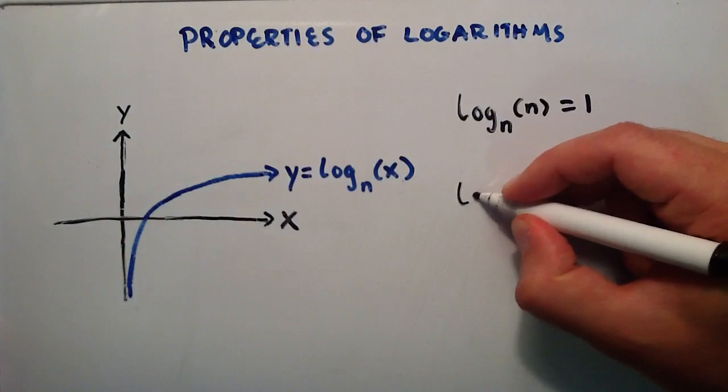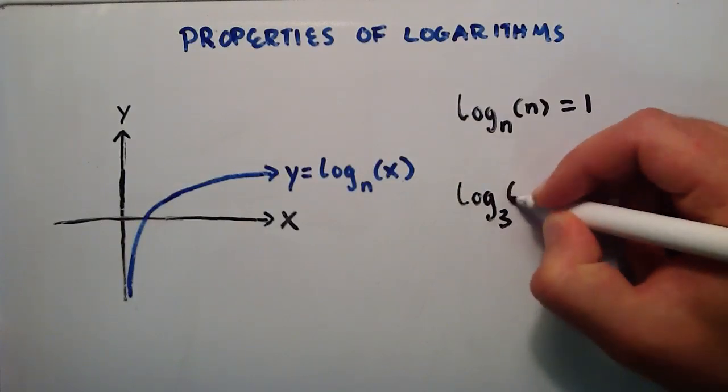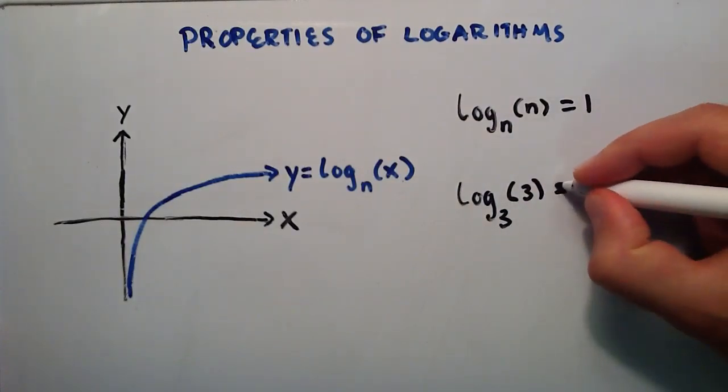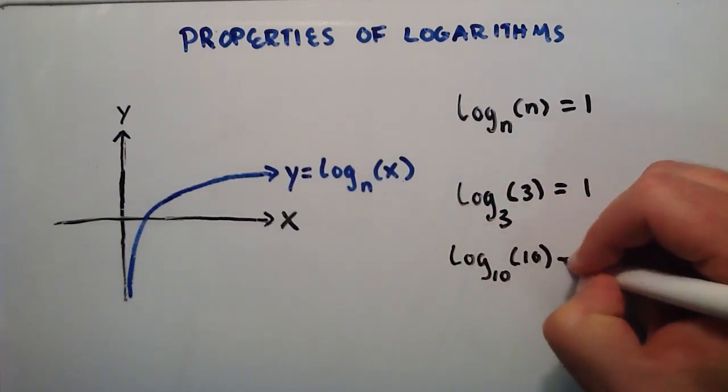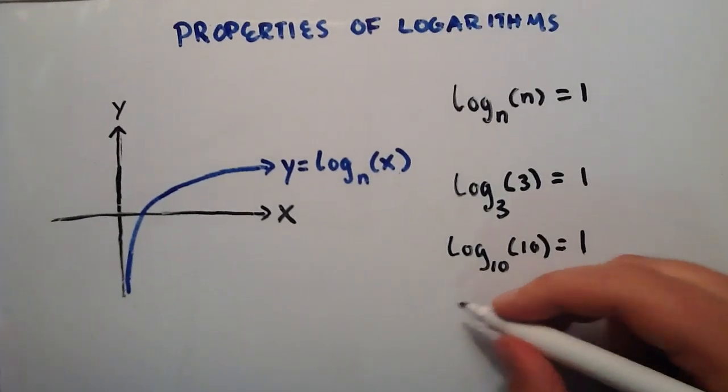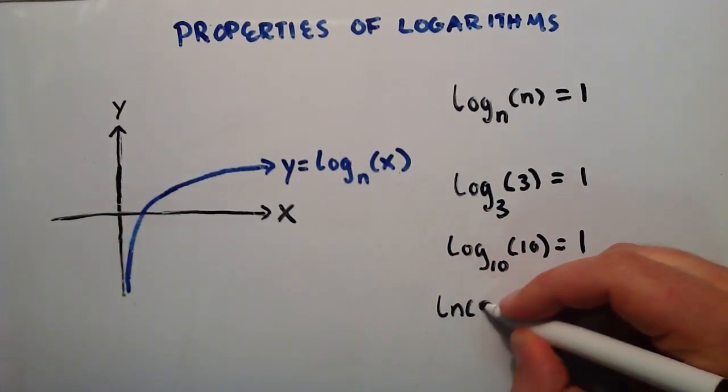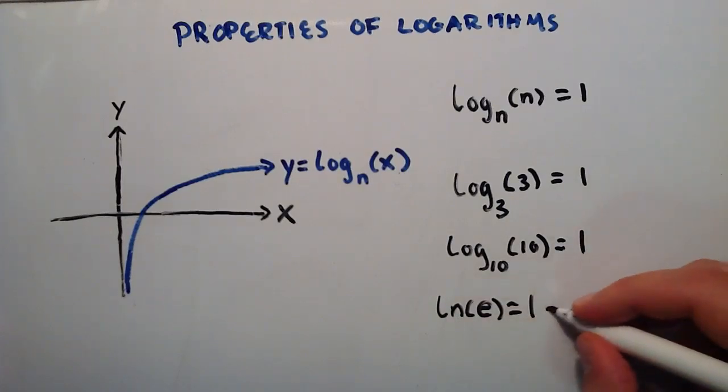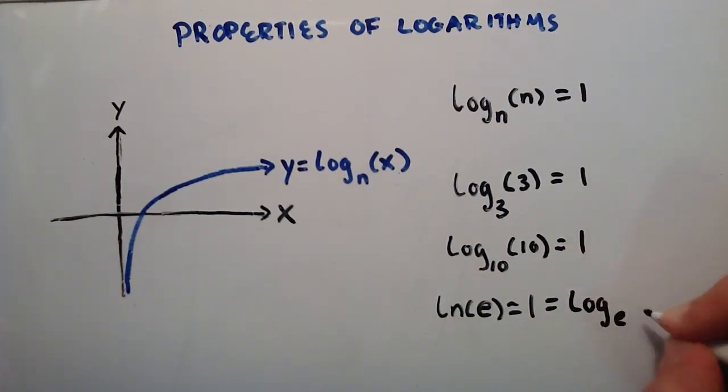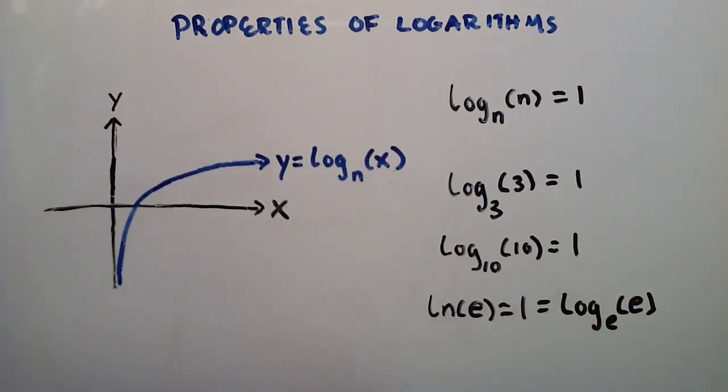So that means that log base 3 of 3 equals 1, log base 10 of 10 equals 1, or even the natural log of e equals 1. Because remember, the natural log is just another way to write log base e. So natural log of e is equal to log base e of e. The base matches the argument, and that equals 1.